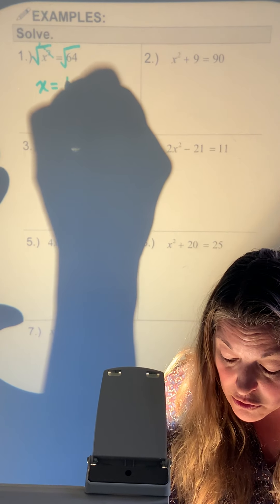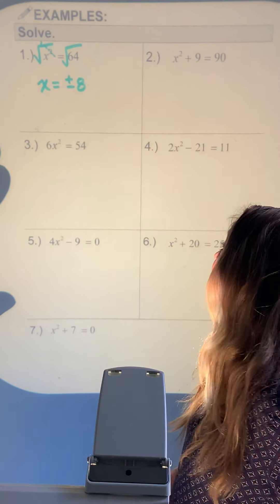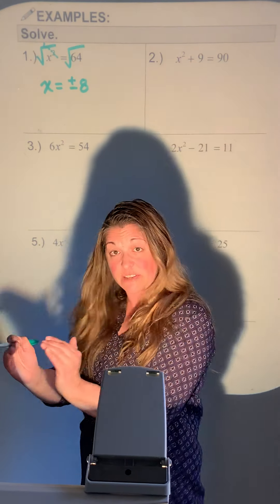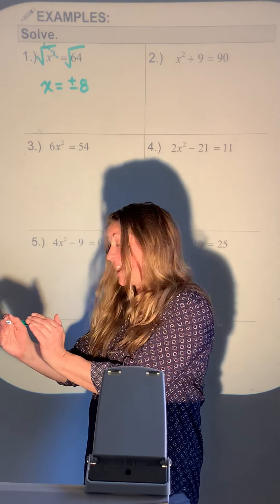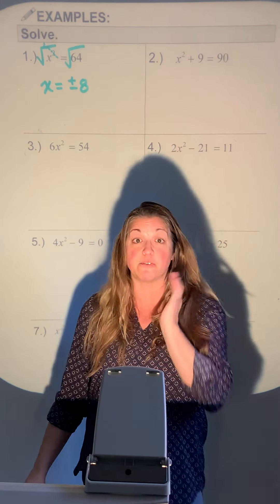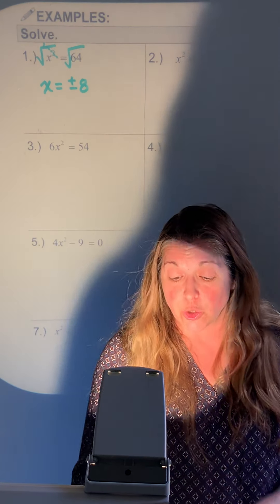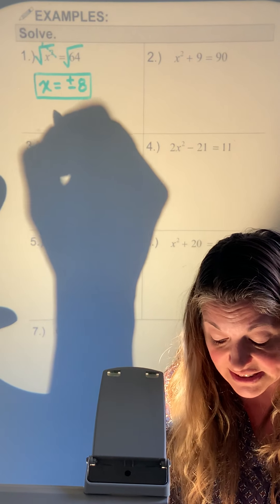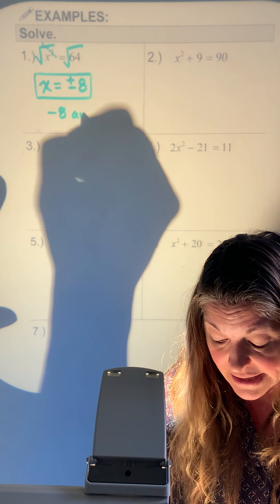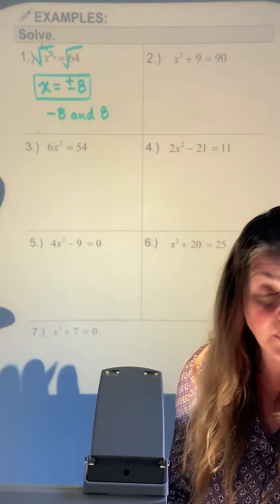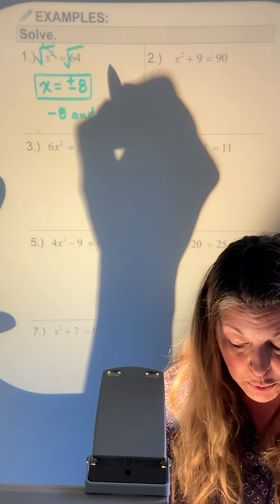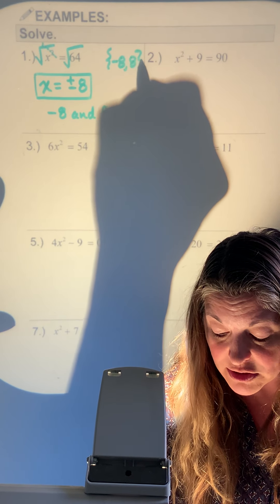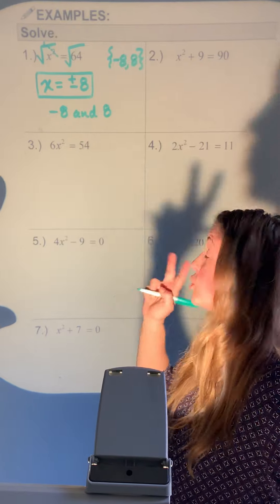Don't forget it's not just positive 8, but also negative 8 — because negative 8 times negative 8 gives positive 64 as well. You've got two answers: positive 8 and negative 8. List them out in braces if you like, just so long as we know there are two answers.